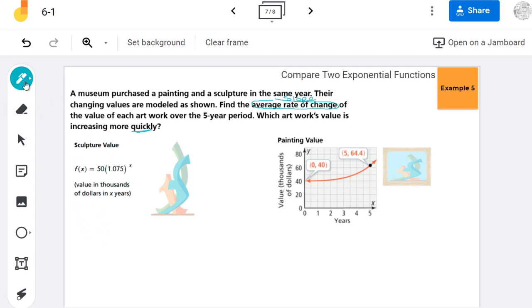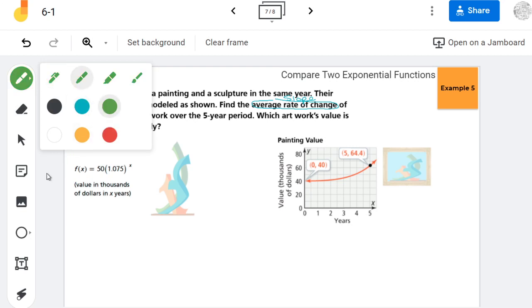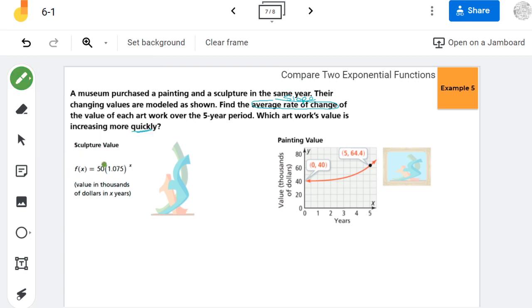What we need to do is actually start by finding the y values that go with this one. The slope formula is that the slope is equal to the change in the y values divided by the change in the x values. We already know that our x values we're dealing with are from 0 to 5 because that's the first five years. We already have our x values, but we need to make sure that we have both sets of y values.